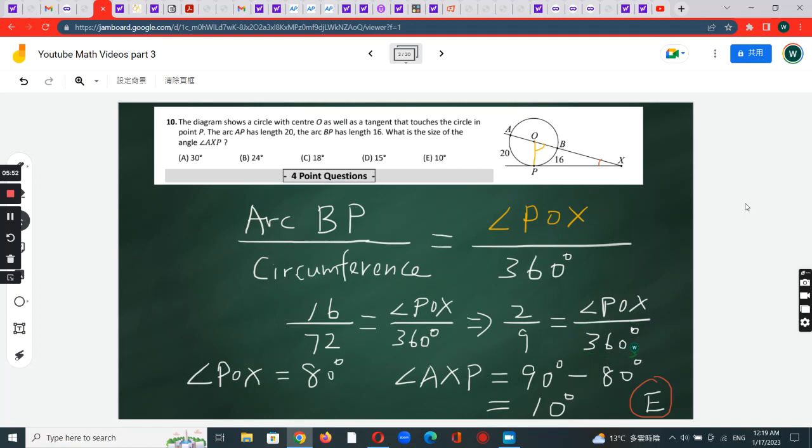On the right-hand side, the 360 degrees will disappear. After multiplying by 360 degrees, on the left it becomes 80 degrees. So now you know this is 80 degrees.